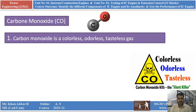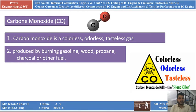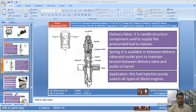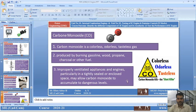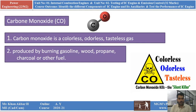Carbon monoxide is a colorless, odorless, and tasteless gas. It is produced by burning gasoline, wood, propane, charcoal, or other fuels. When we burn gasoline — that is petrol — wood, propane, charcoal, or other fuels, and combustion occurs with these components, carbon monoxide will be produced.